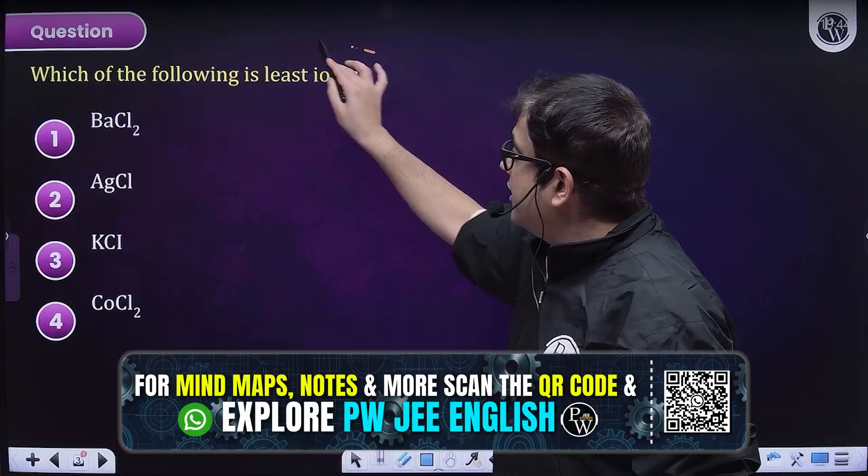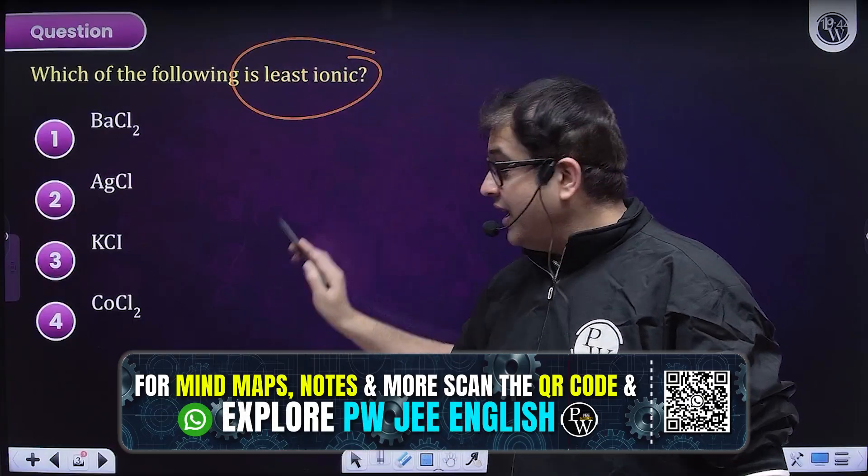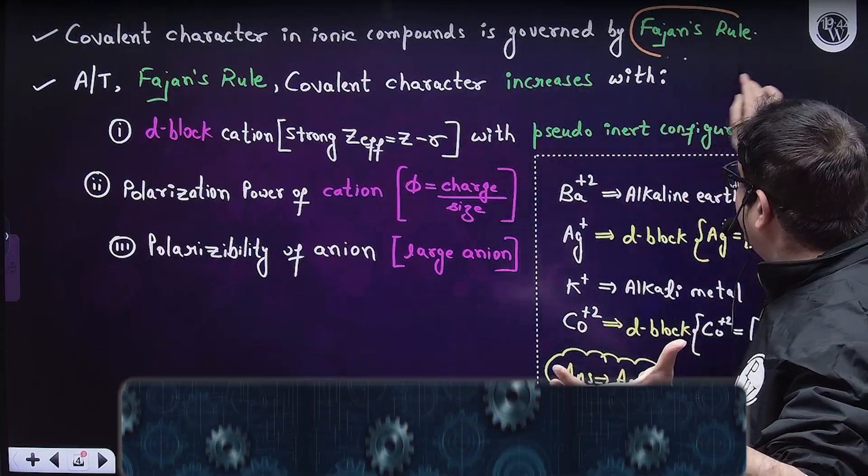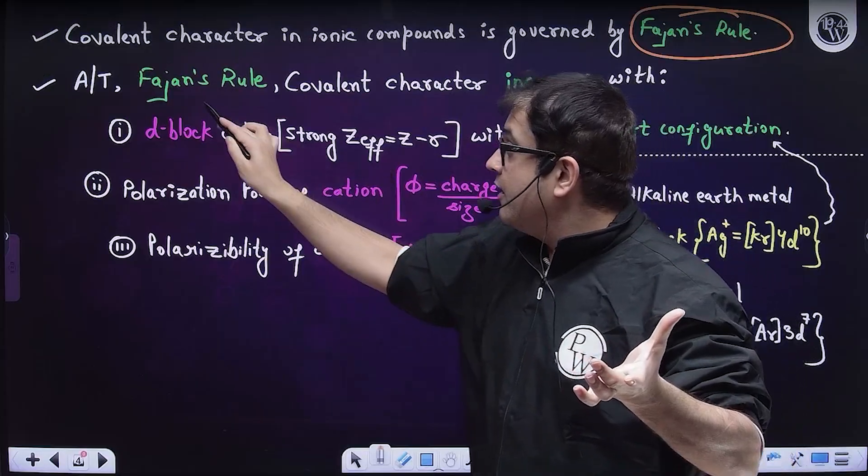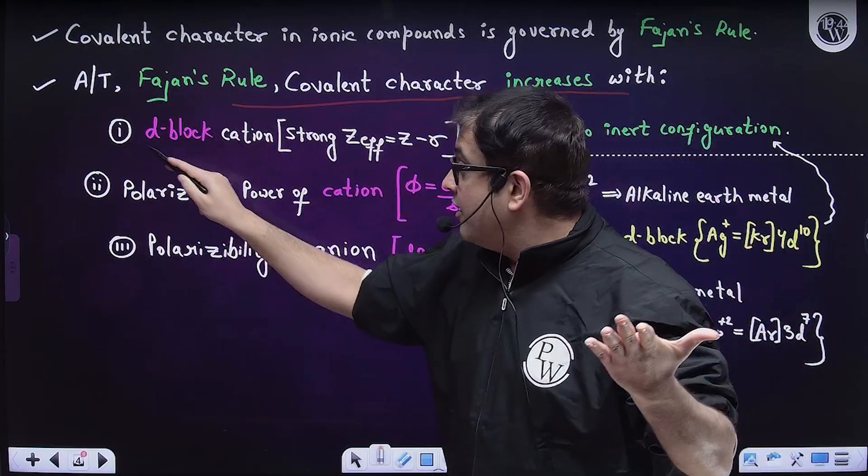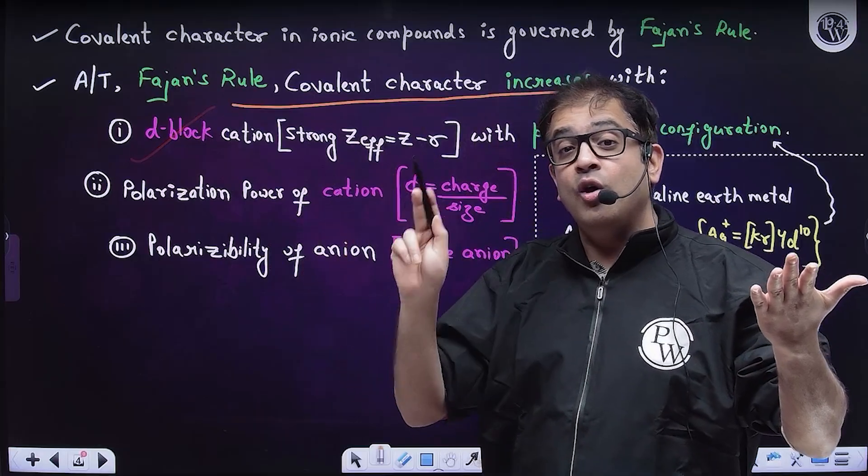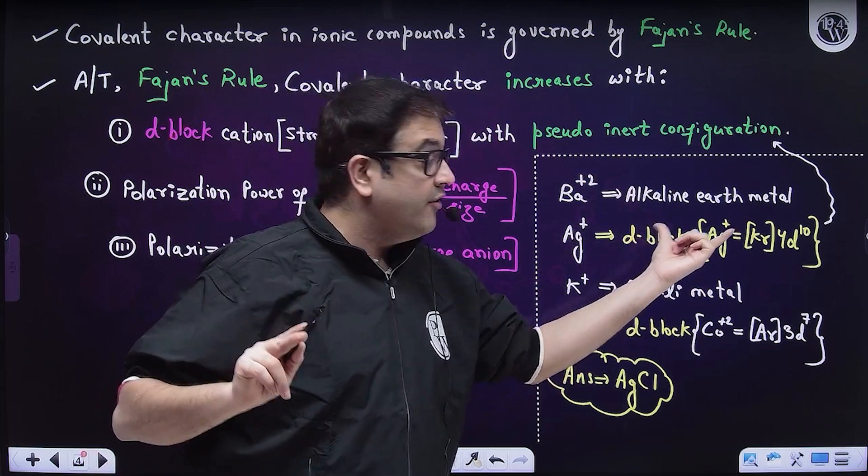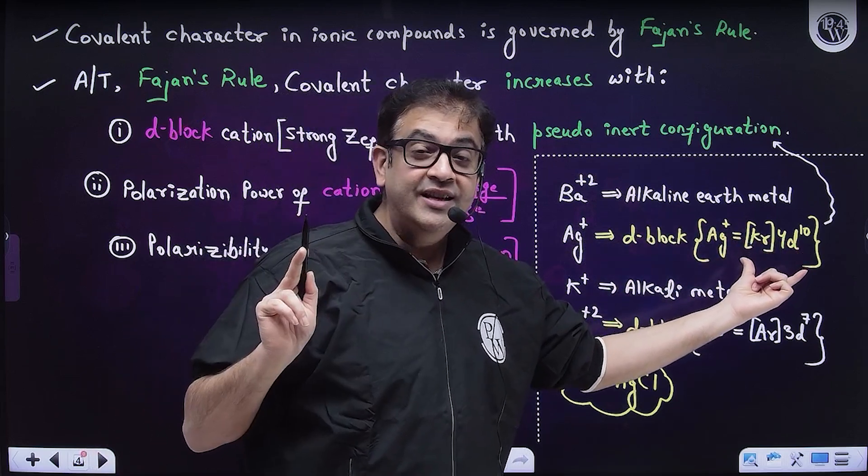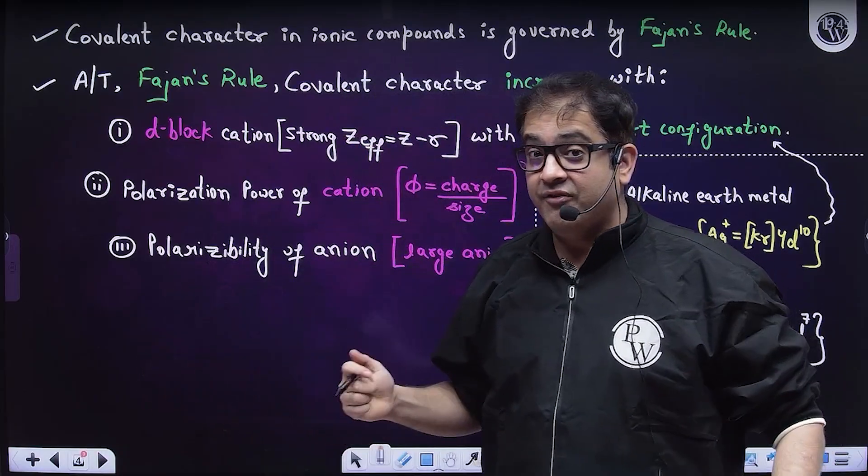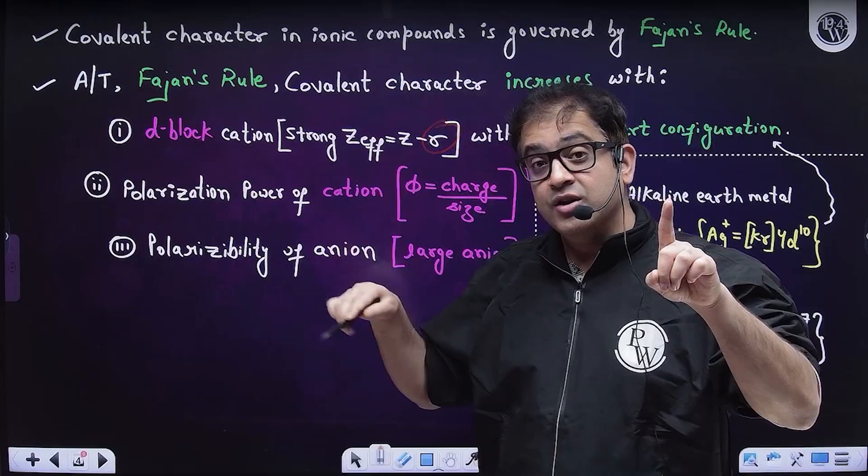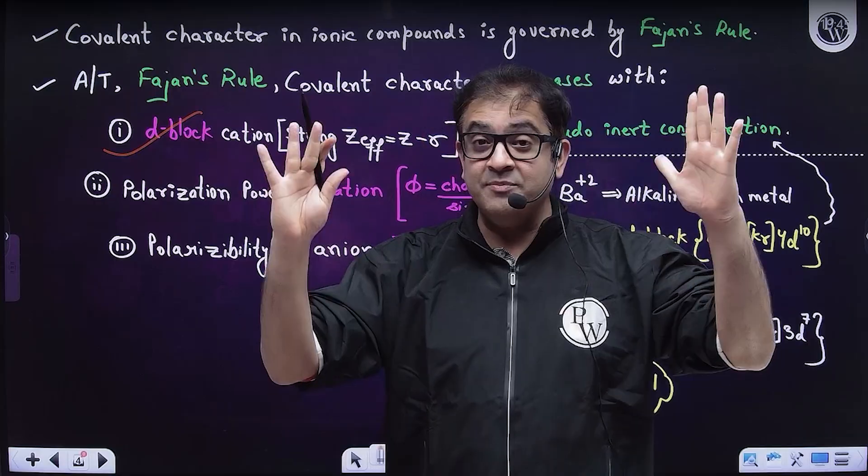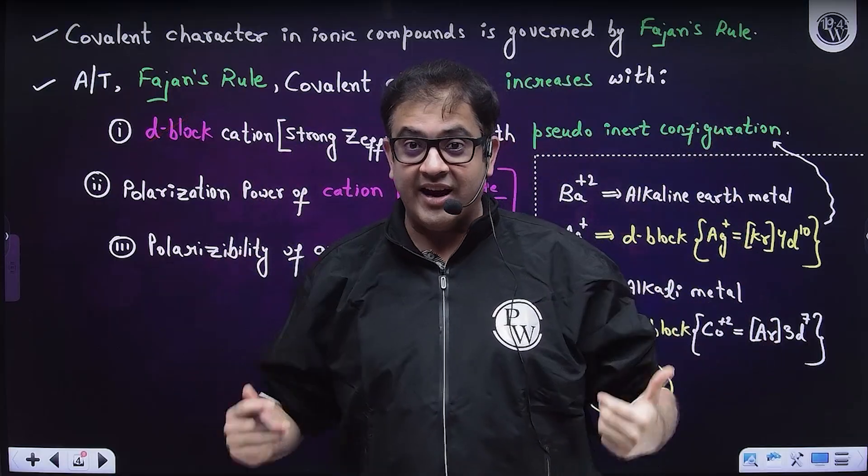Let's get started. The first question says, which of the following is least ionic? In ionic compounds, covalent nature can be calculated and estimated using the famous Fasan's Rule, which says covalent nature in ionic compound increases when you have D-block cations that have pseudo-inert gas configuration.